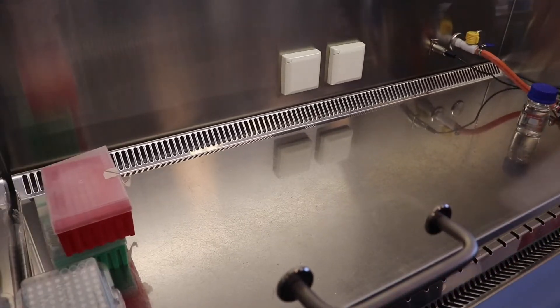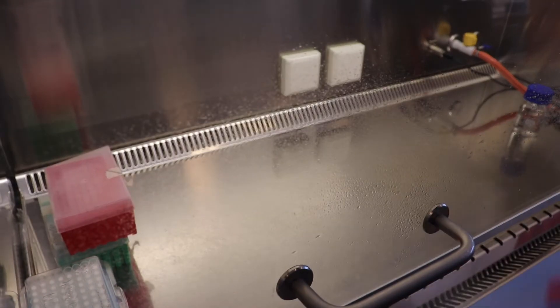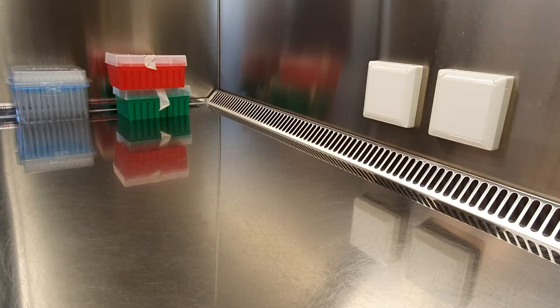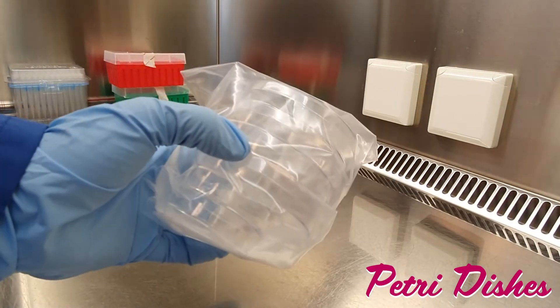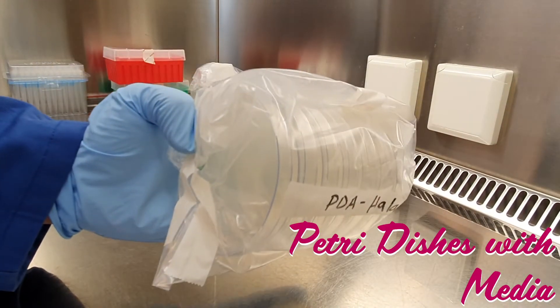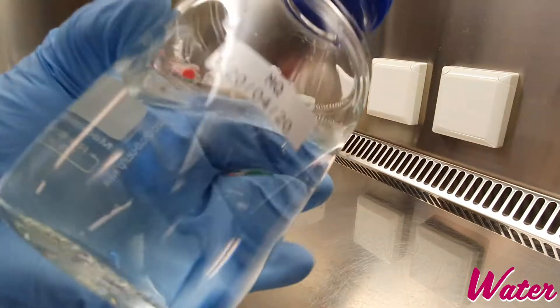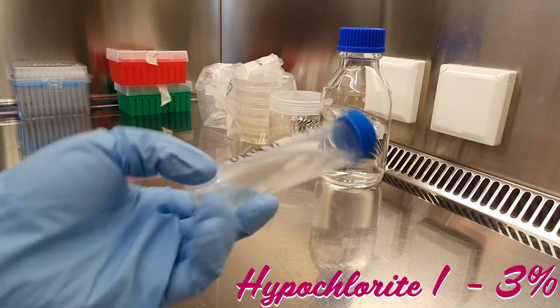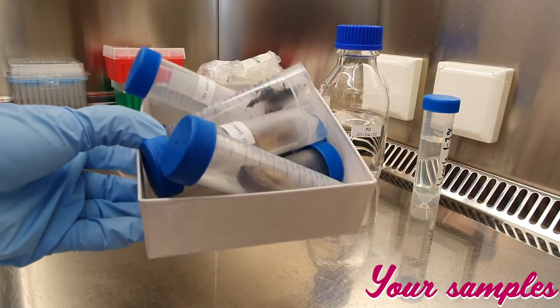The first thing we are going to do is clean very well, as usual. Now we are going to need empty petri dishes, petri dishes with media, filter paper, straw, water and bleach one to three percent, and of course our samples.